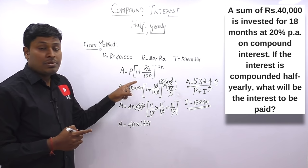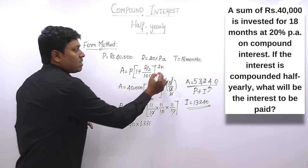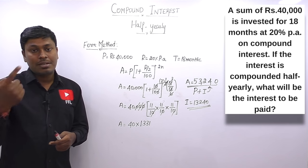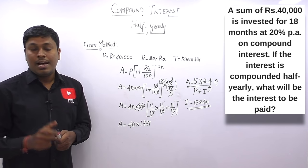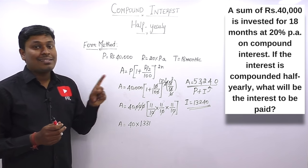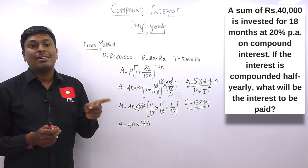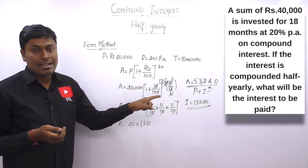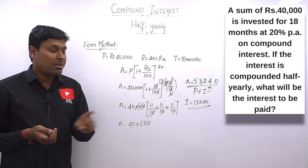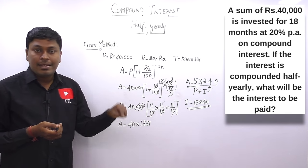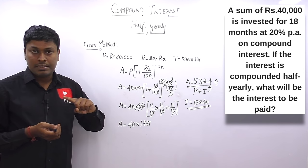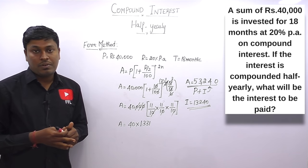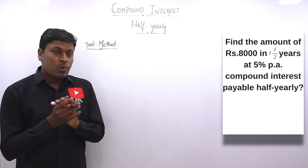Two important notes when applying the formula: Note 1 — n should be in number of years; if given in months divide by 12. Note 2 — after finding the answer, check whether the question asks for total amount or only the interest. If they ask only interest, subtract the principal from the total amount.